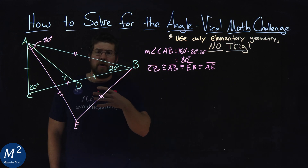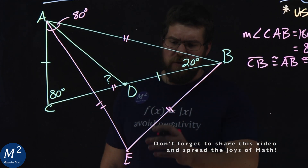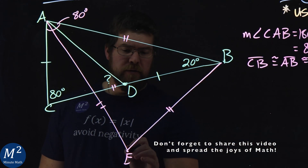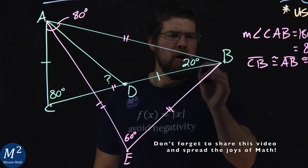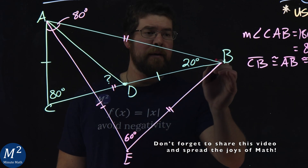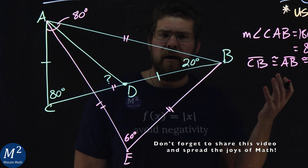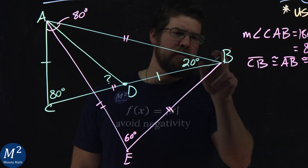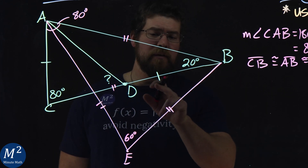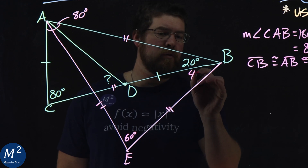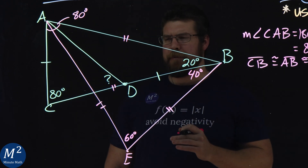In an equilateral triangle all interior angles are 60 degrees, so angle AEB is 60 degrees. Since the full angle at B is 20 degrees plus something up to 60, angle DBE must be 40 degrees — making DBE and ABE add up to 60 degrees total.